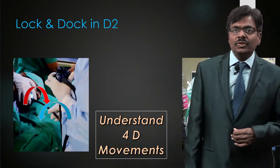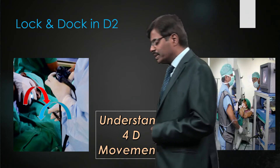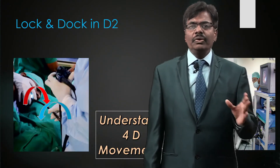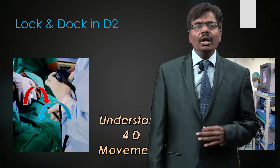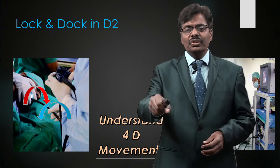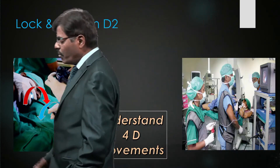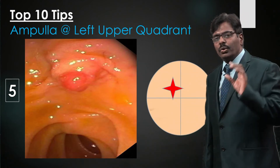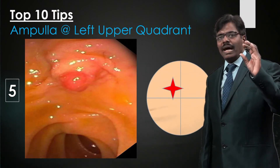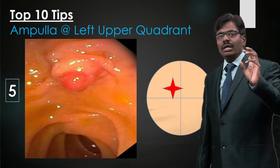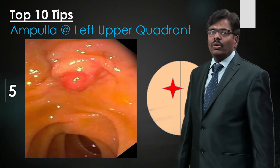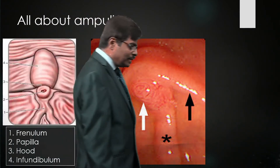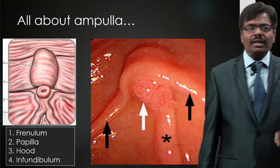Once in D2, you need to remain there — as in the case just shown, the procedure took about five minutes. Sometimes it is frustrating — forty or fifty minutes may pass. To stay in D2, you must know the four D-movements: controlling the big wheel, small wheel, shaft, and elevator. Tip: position your target ampulla in the left upper quadrant at approximately 10 o'clock because your trajectory comes from 3 o'clock toward that position.